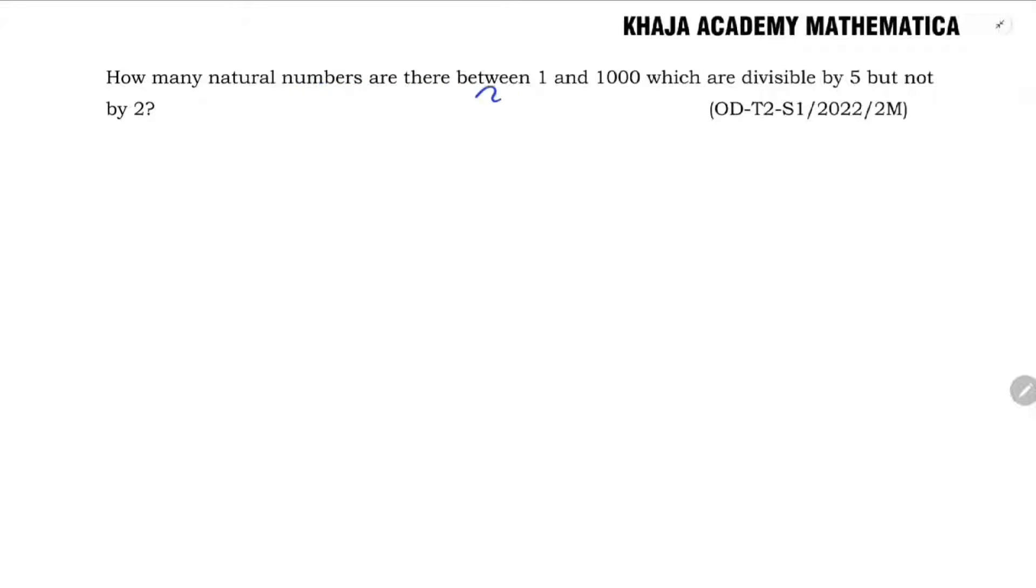How many natural numbers are there between 1 and 1000 which are divisible by 5 but not by 2? See here.